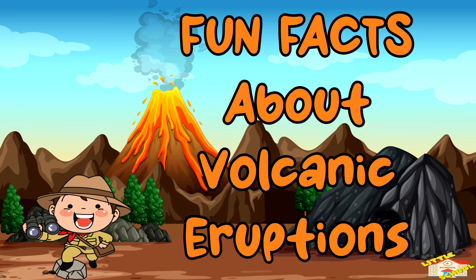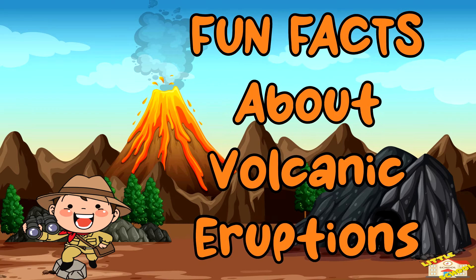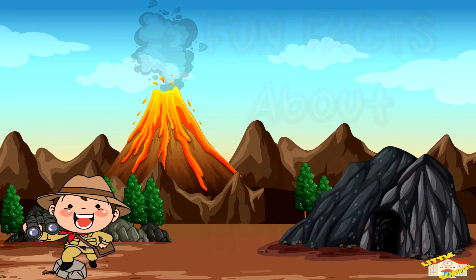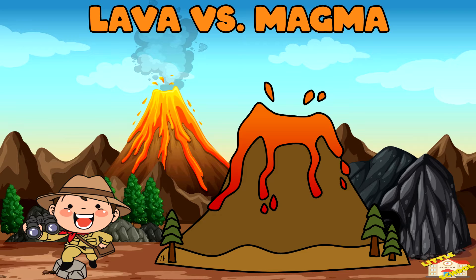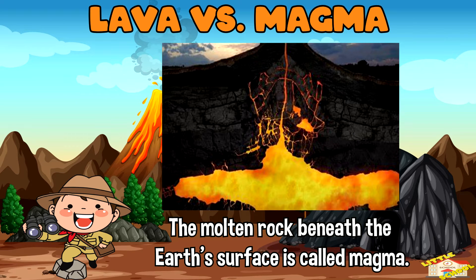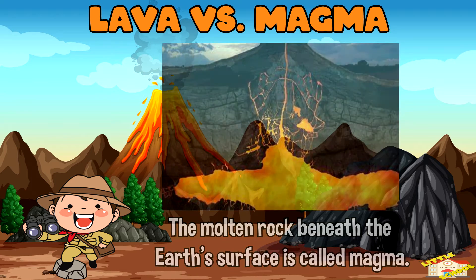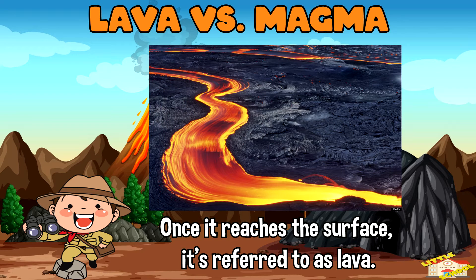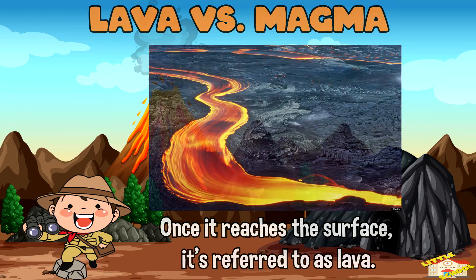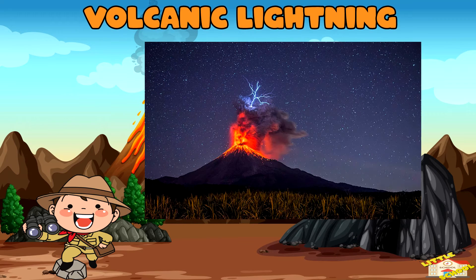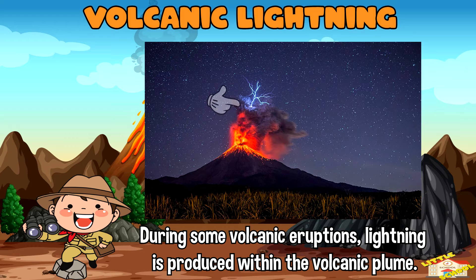Lava versus magma: the molten rock beneath the earth's surface is called magma. Once it reaches the surface, it's referred to as lava. Volcanic lightning: during some volcanic eruptions, lightning is produced within the volcanic plume.